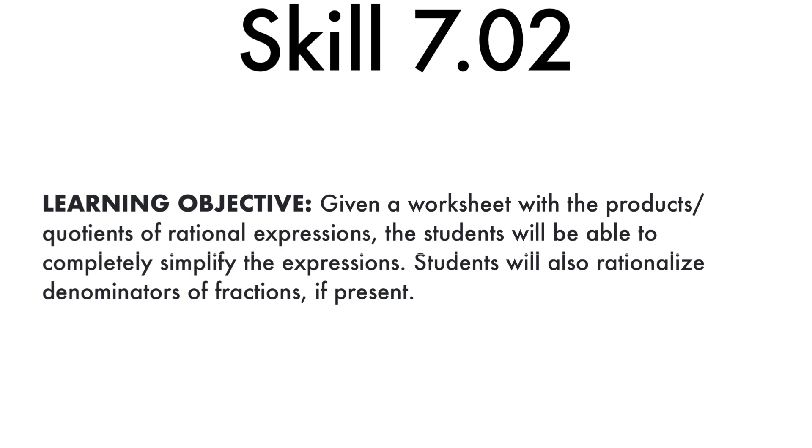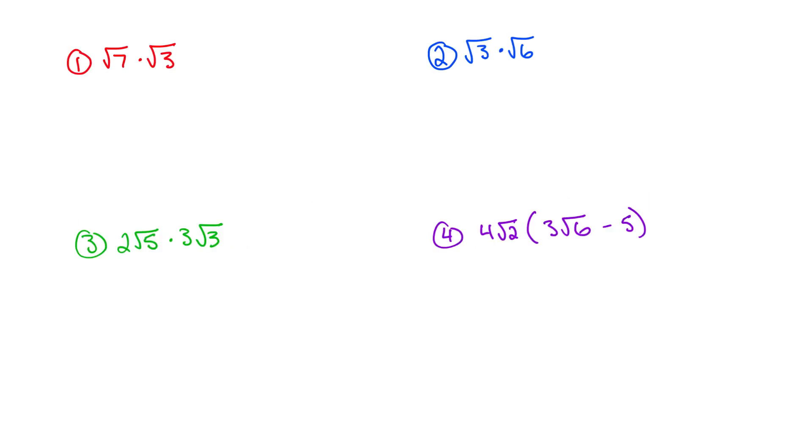We're going to have radicals in expressions that we're going to be multiplying different portions together. I got two slides with problems. Problem number one, I have the square root of 7 times the square root of 3. Here is your golden rule when it comes to multiplying and dividing radicals. At least for now, later we will adjust this.